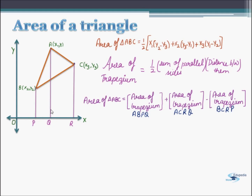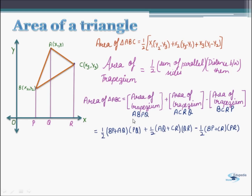Similarly, for the second trapezium, the parallel sides are AQ and CR and the distance is QR. For the third trapezium, we have parallel lines BP and CR and the distance between them is PR. Thus we have this expression where we have substituted the different names of the parallel lines and the distances for the corresponding trapeziums.